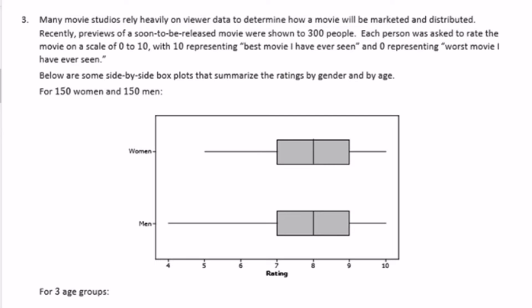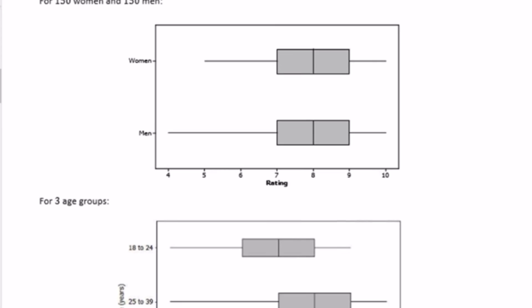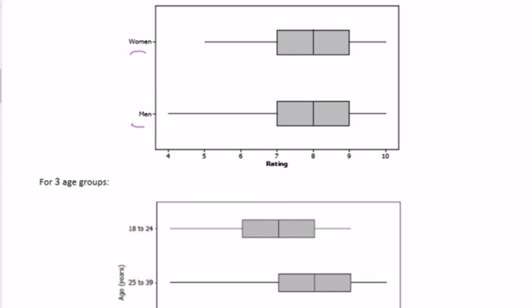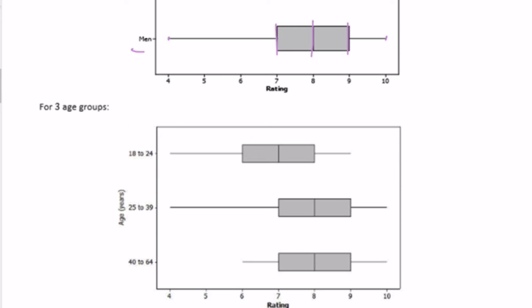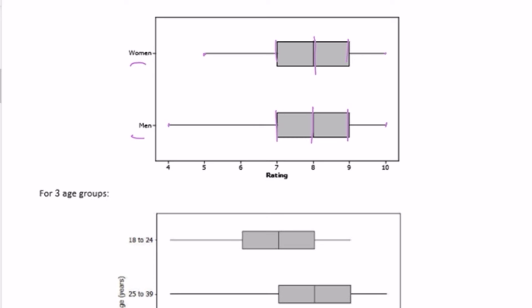Number three, many movie studios rely heavily on viewer data to determine how a movie will be marketed and distributed. Recently, previews of a soon-to-be-released movie were shown to 300 people. Each person was asked to rate the movie on a scale of 0 to 10, with 10 representing best movie I've ever seen and 0 representing worst movie I've ever seen. Below are some side-by-side box plots that summarize the ratings by gender and by age. For 150 women and 150 men. So we have women, men. Looks like these are very similar. They have about the same median. Q1 is the same. Q3 is the same. The maximums even seem to be the same. Just the men had a, the minimum for a woman was a 5 and the minimum for the men was a 4.